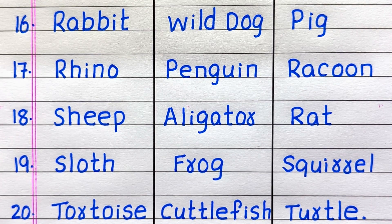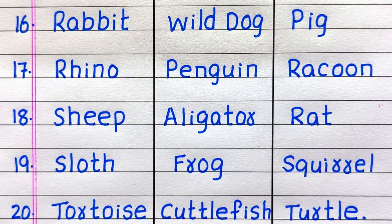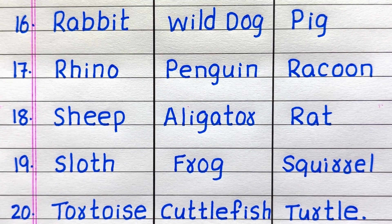16th name of an omnivore animal is Pig. 17th Raccoon. 18th Rat. 19th Squirrel. 20th Turtle.